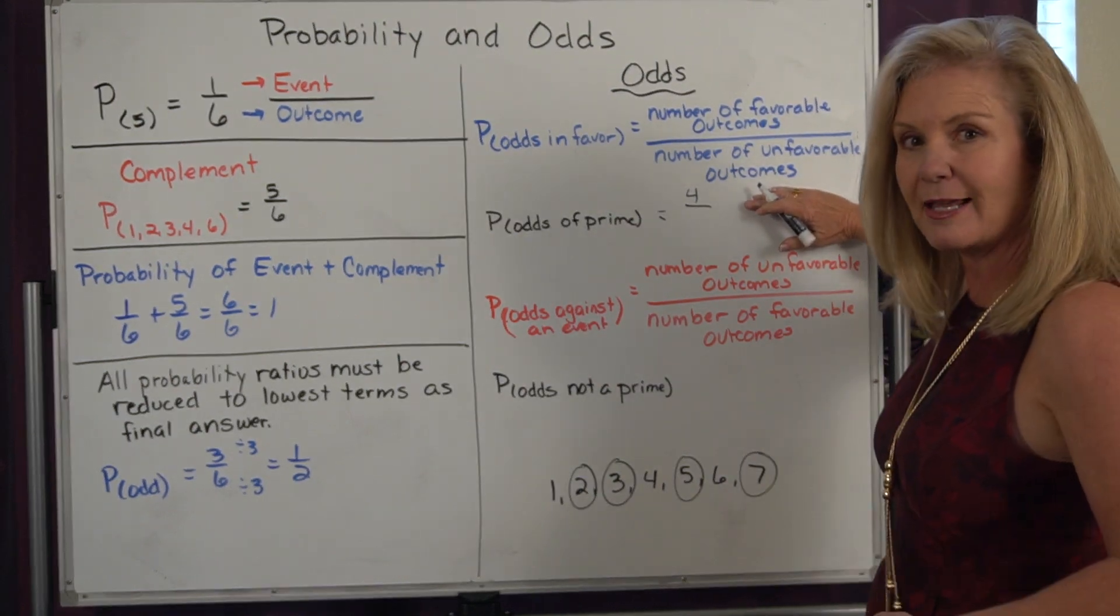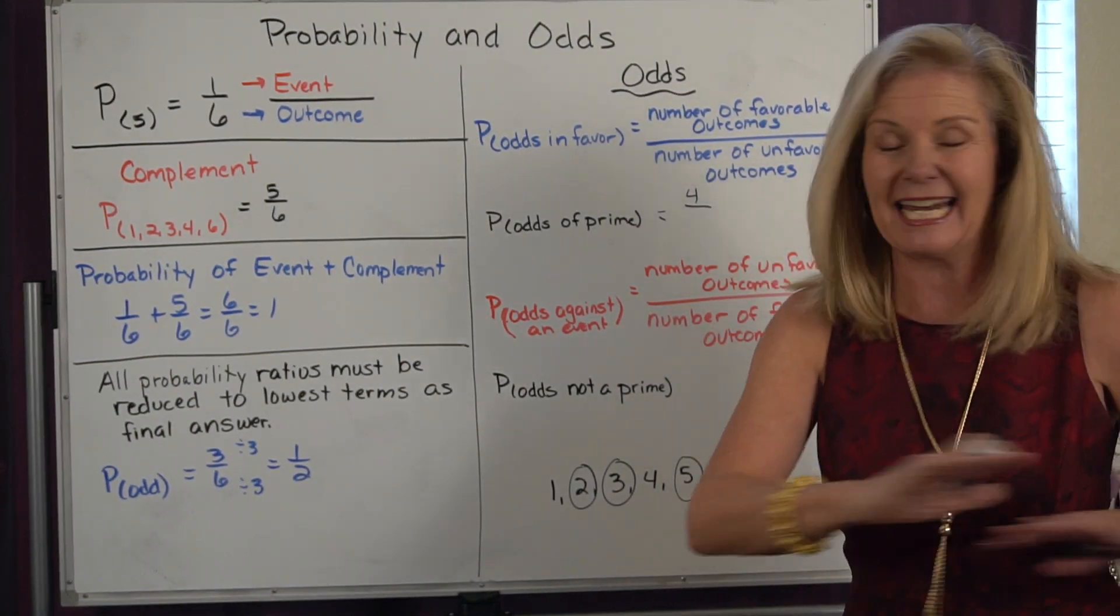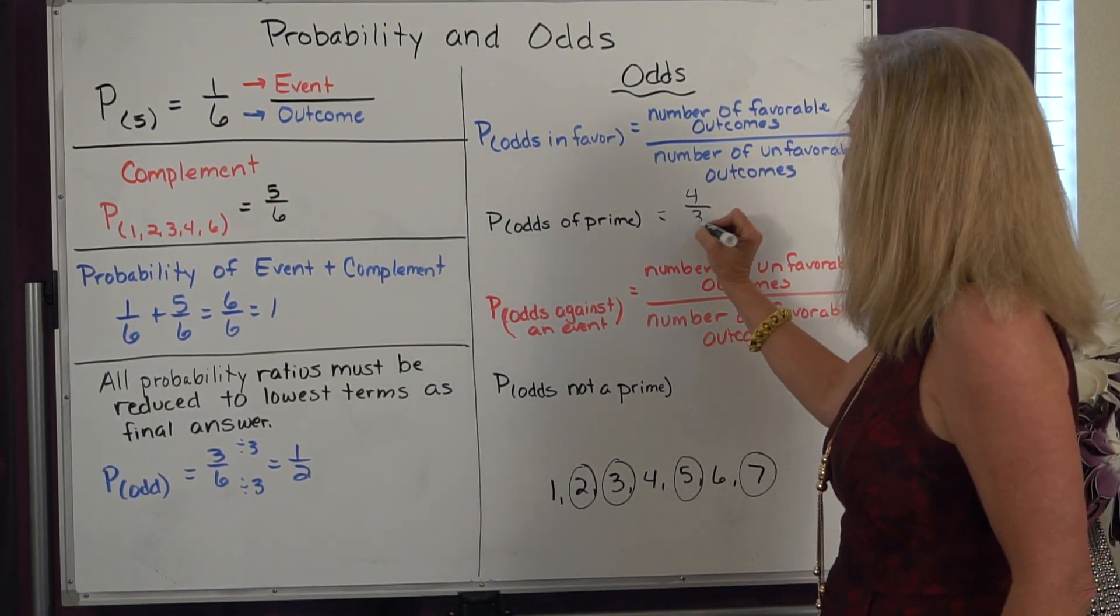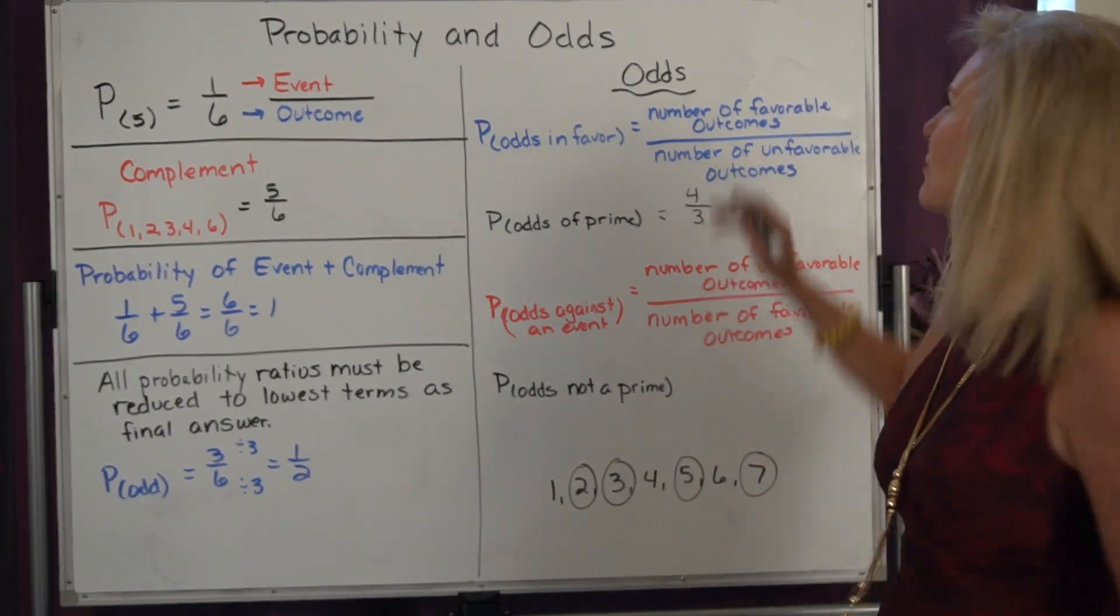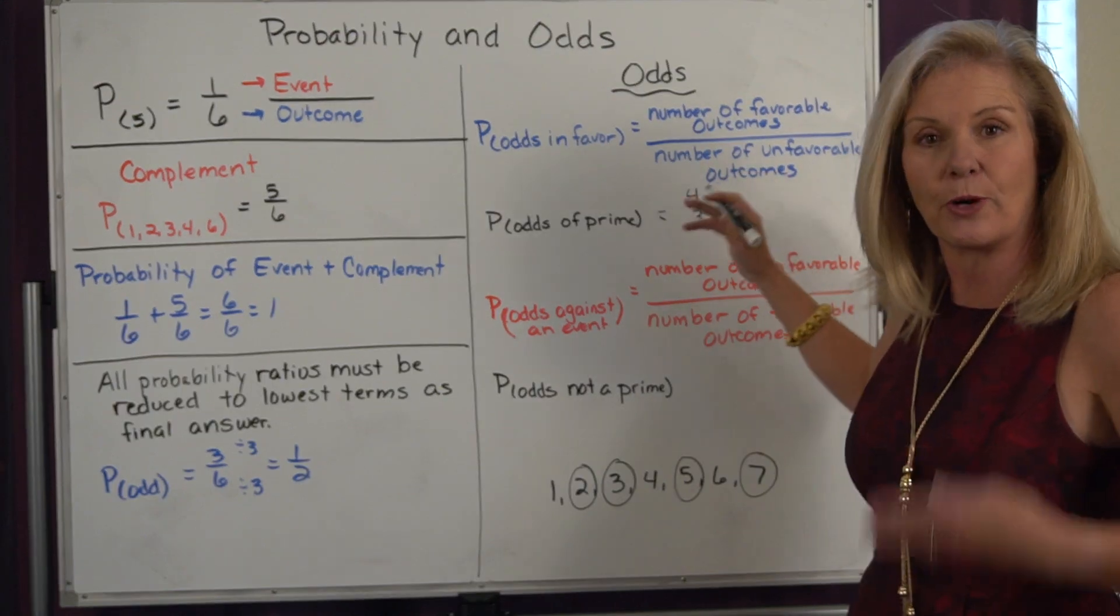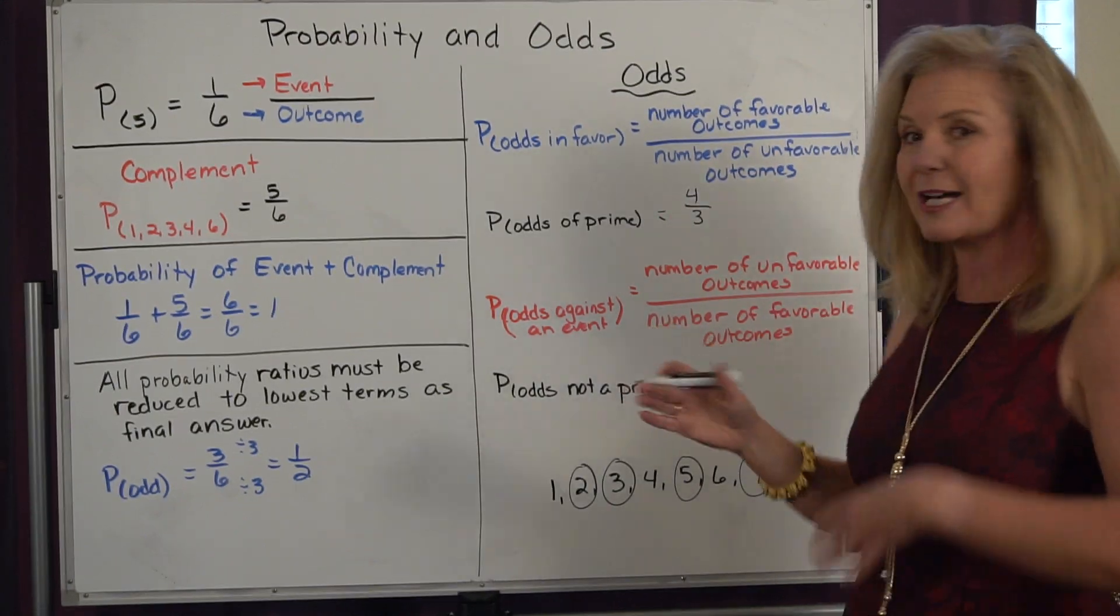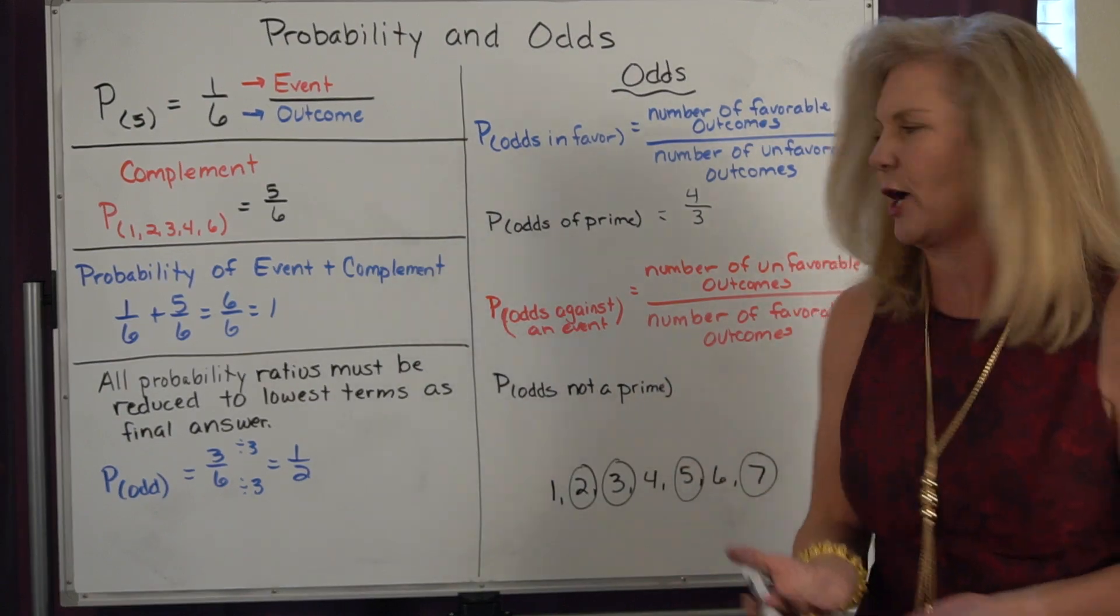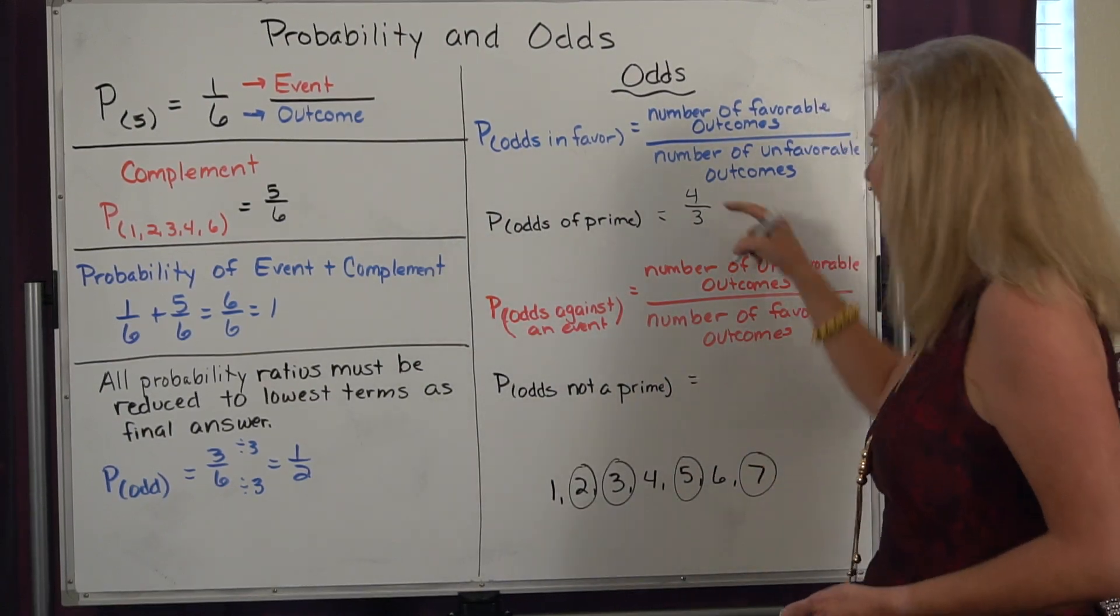Now the bottom part of that ratio is how many ways can it not happen. I have 1, 2, 3 ways it cannot happen, so those odds, that ratio, would be 4 to 3. Now what if I wanted the opposite? What if I want odds of not having a prime number? Well then really what it does is it just reverses out that ratio.